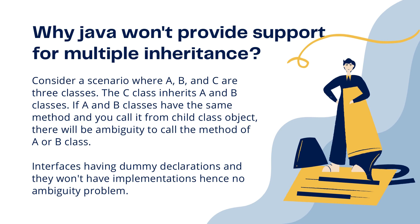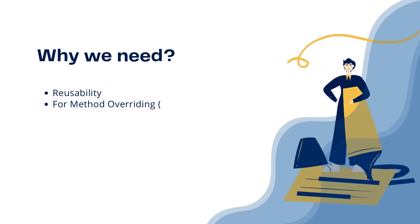So why do we need inheritance? Reusability, and also for method overriding. As mentioned in the previous lecture, to override a method you need to extend the parent class — without inheritance, method overriding cannot be achieved. These are the basic advantages and needs of inheritance in Java and OOP. Thanks for watching — if you found this informative, don't forget to like and subscribe.